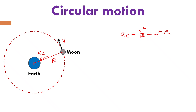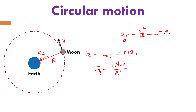What force contributes to the centripetal force? If you have centripetal acceleration, you need a net external force pointing to the center. That net external force — the centripetal force — comes from gravitational force: big G times the mass of Earth times the mass of the moon, divided by the square of the distance between them. In this case, gravitational force provides the centripetal force.